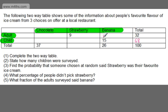26 minus 15 is 11, so 11 adults chose banana. If I consider chocolate now, the adults who chose chocolate: 11 plus 9 is 20, and 20 from 32 gives me 12. So there were 12 adults who chose chocolate. The total number who chose chocolate is 37, so 37 minus 12 is 25 — there were 25 children choosing chocolate.